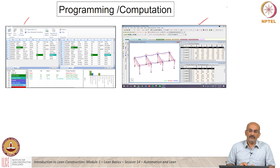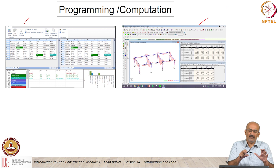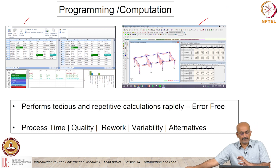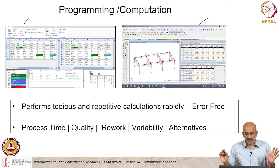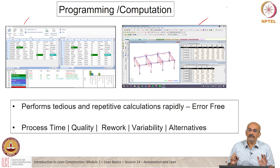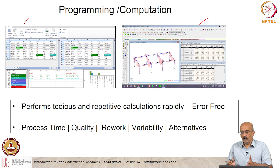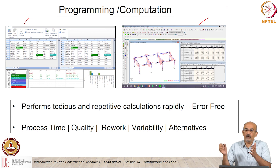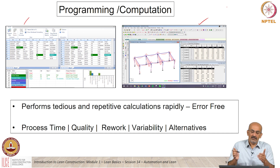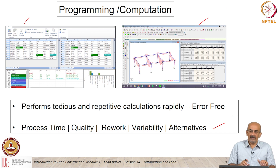How does this affect a lean implementation? When we implement this into a project, it performs tedious repetitive calculations error-free. Process time decreases. Quality improves. Rework decreases. Variability decreases. We can explore more alternatives — whereas manually we might only do one or two iterations. Even when we take basic computing, it has a large impact on these dimensions, and we can see where it enables lean.